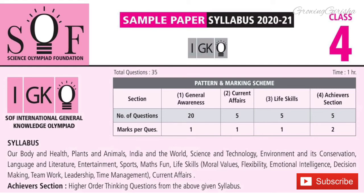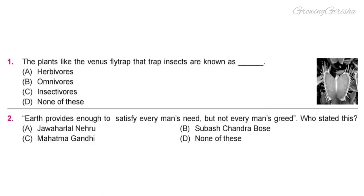International General Knowledge Olympiad Sample Papers for Class 4, 2020-21. Total questions will be 35 and time allotted will be 1 hour. There will be 20 questions from General Awareness (1 mark each), 5 questions from Current Affairs (1 mark each), 5 questions from Life Skills (1 mark each), and 5 questions from Achievers Section (2 marks each).